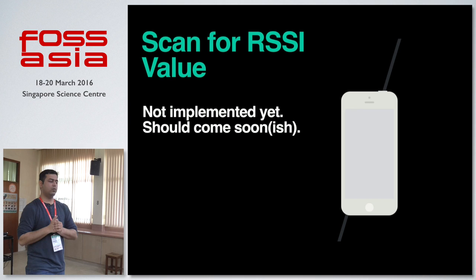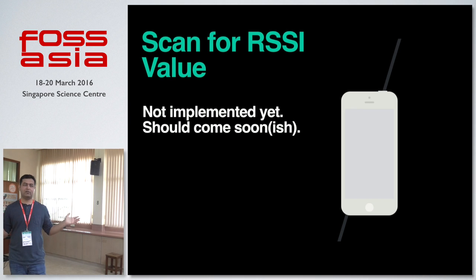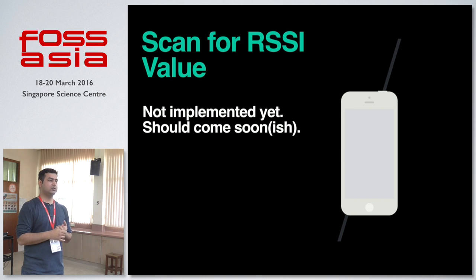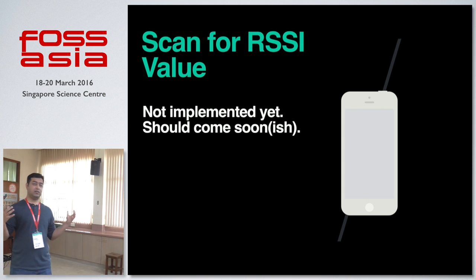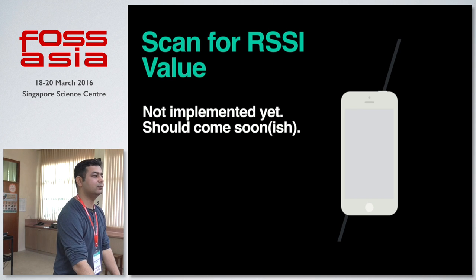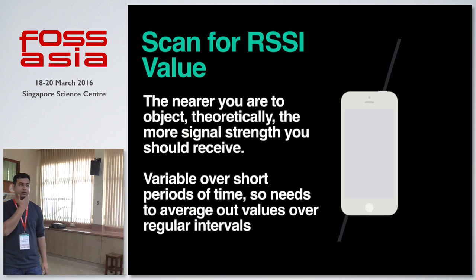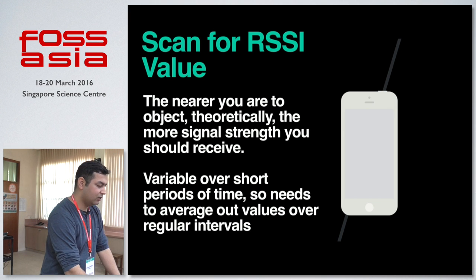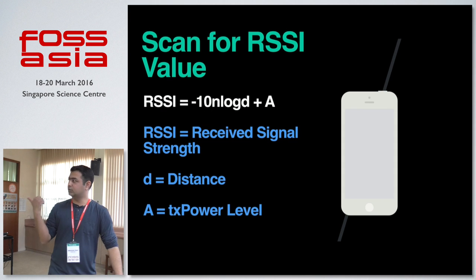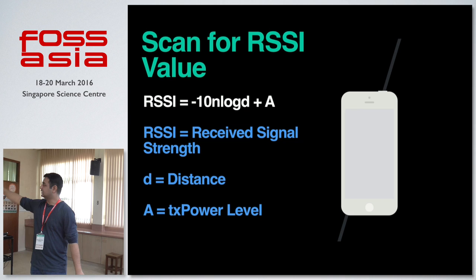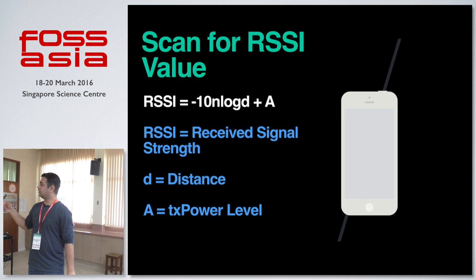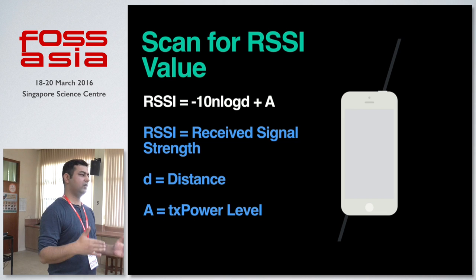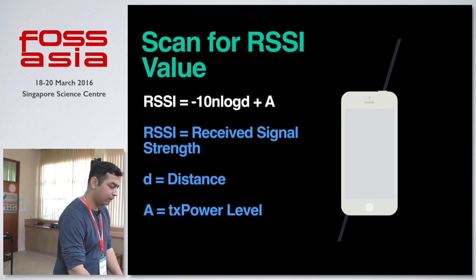One more thing I wanted to talk about is what people call indoor navigation. One of the ways you can do this is to scan for the RSSI value — the received signal strength that you get. Theoretically speaking, the nearer you are to an object, the more RSSI value you'll have. The farther you are from the object, the less signal strength you'll have. So what you want to do is use this formula: RSSI = -n log(d) + A. If we know the RSSI and also know the TX power level, it's easy to calculate d, or have an approximation of the distance.